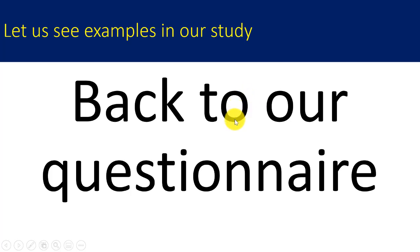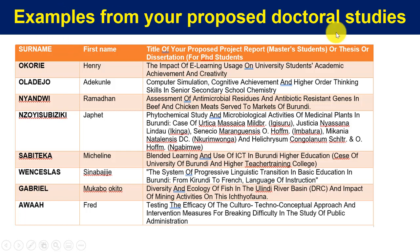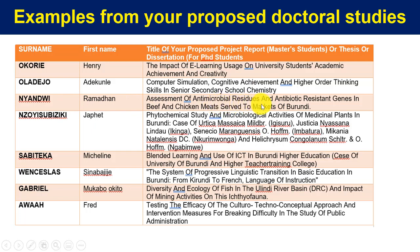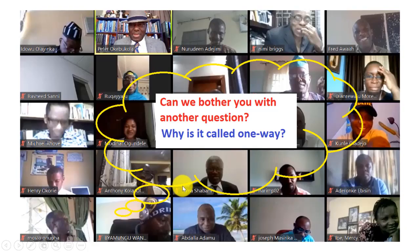Let's look at examples from proposed doctoral studies: the impact of e-learning usage on university students' academic achievement and creativity, where subjects could be partitioned into three groups; computer simulation on cognitive achievement and higher-order thinking skills in senior secondary school with three or more groups; and assessment of antimicrobial residues and antibiotic-resistant genes in beef and chicken meats in markets of Burundi — possibly also using three or more groups.